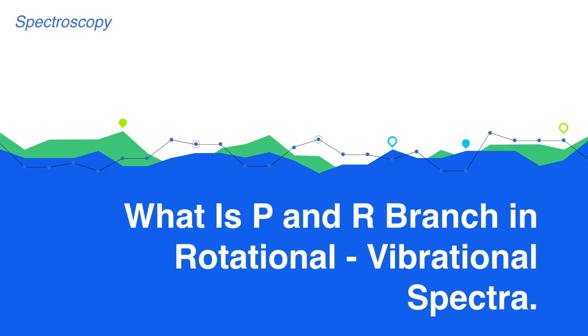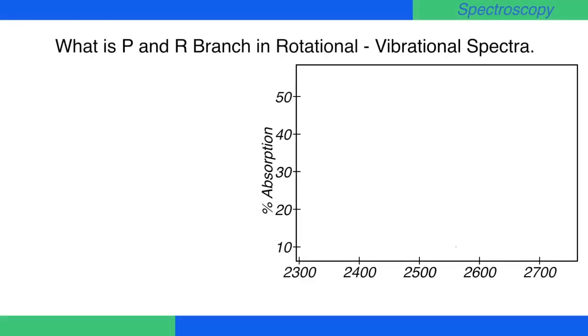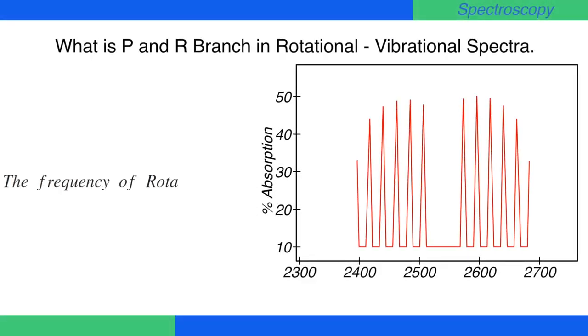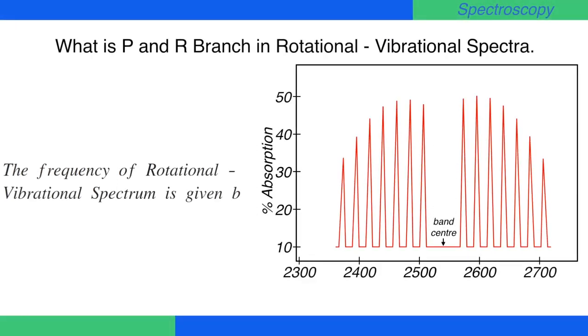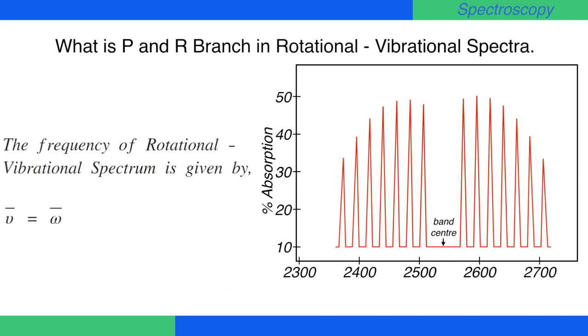What is P and R branch in rotational vibrational spectrum? The frequency of rotational vibrational spectrum is given by nu bar equals omega bar plus 2BJ. This is equation number 1.